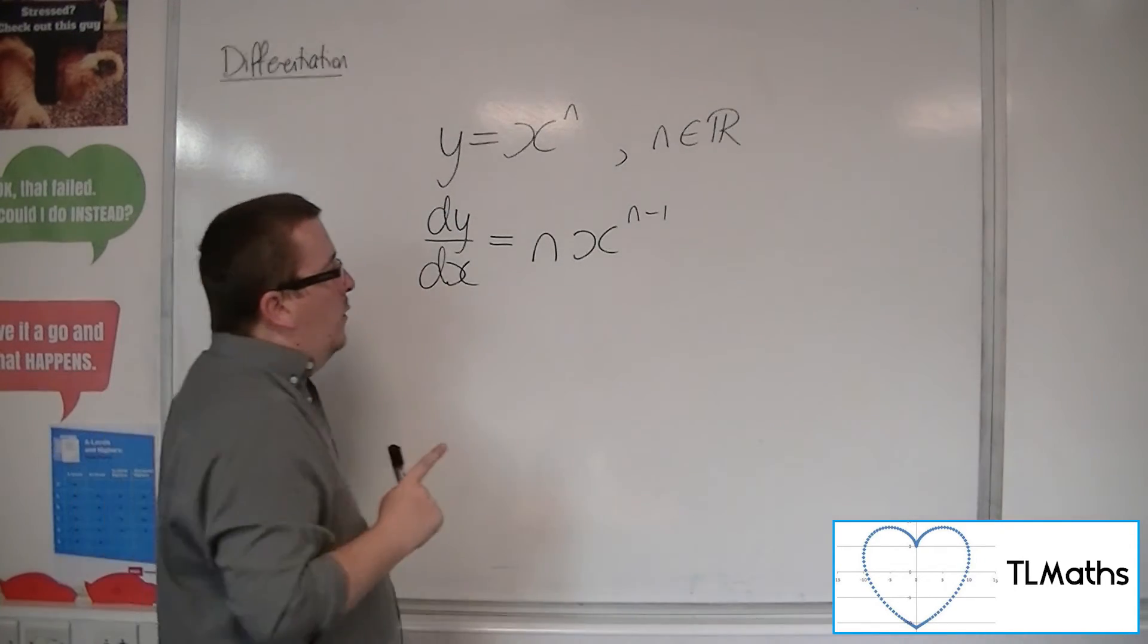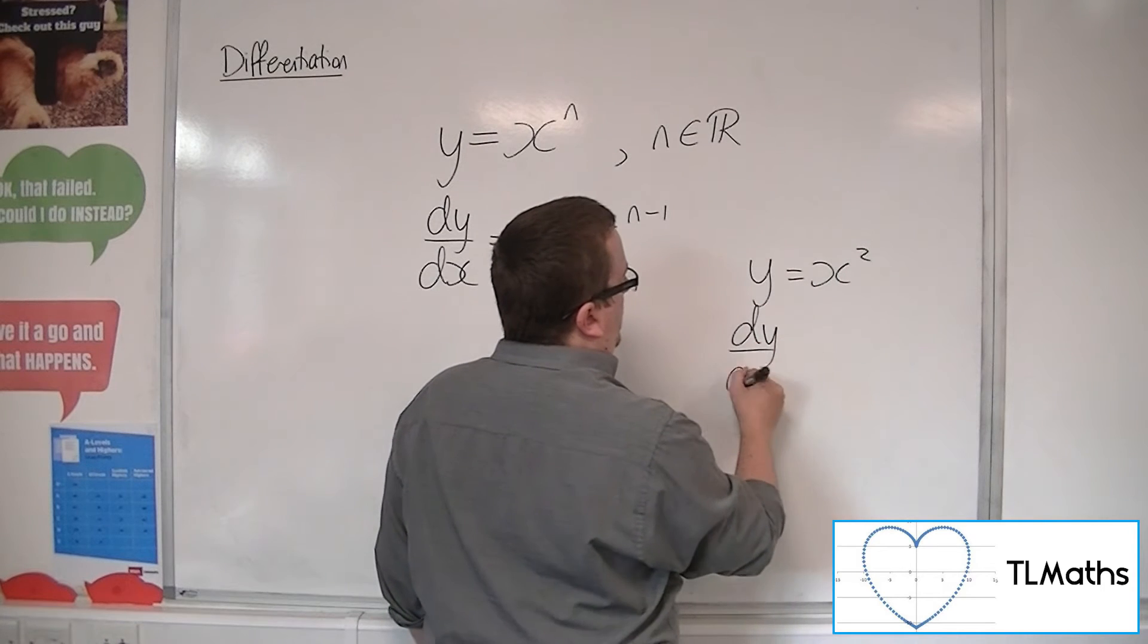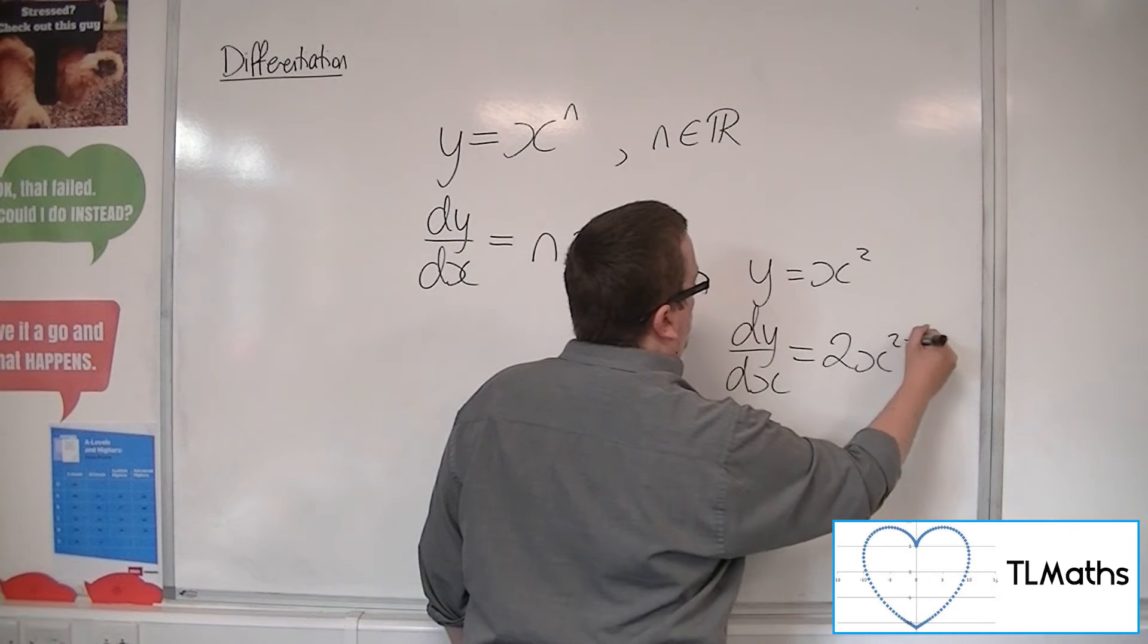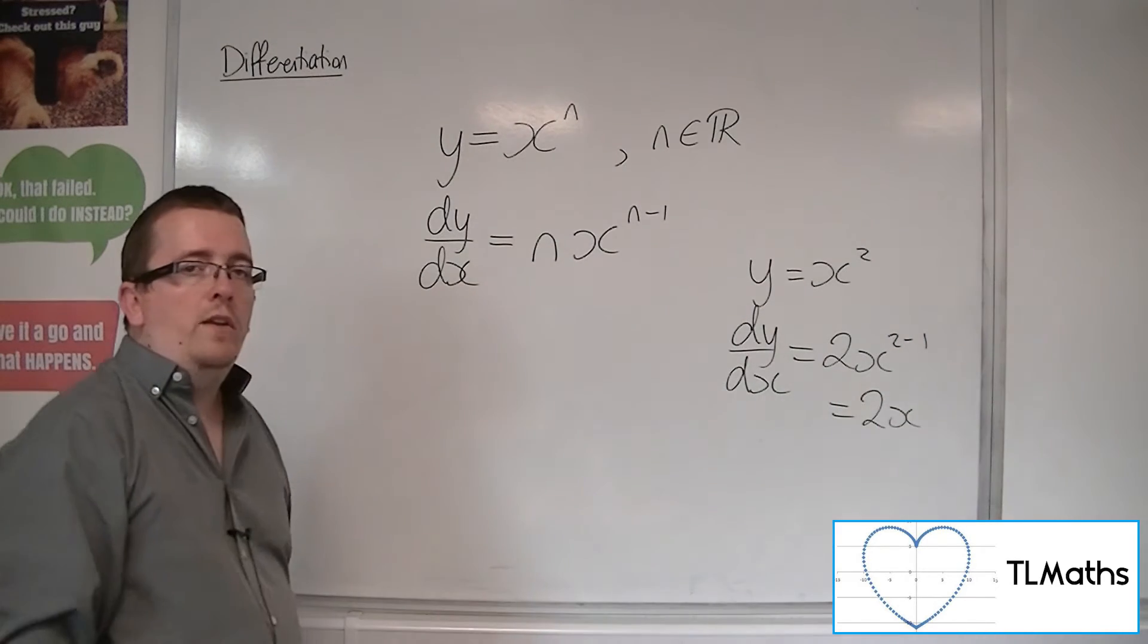So in that way, y equals x squared became the 2 came down to the front. We took 1 off the power, leaving us with just 2x to the 1, or 2x.